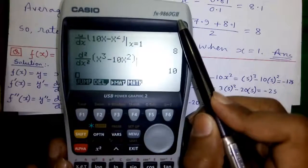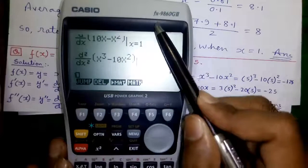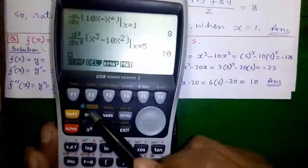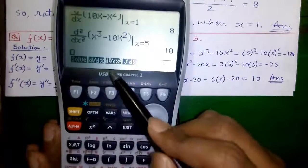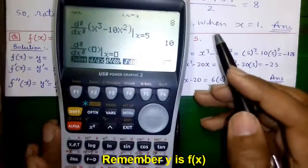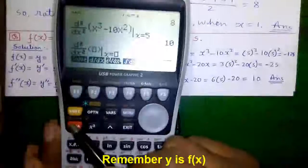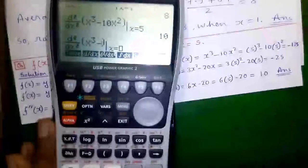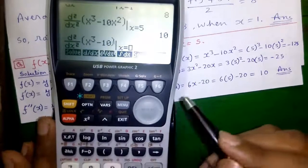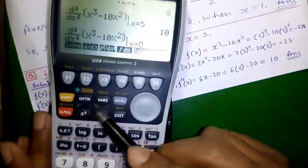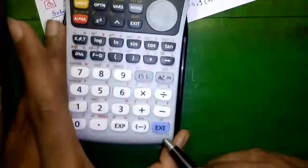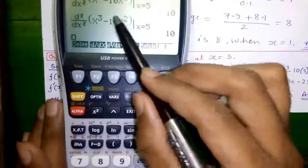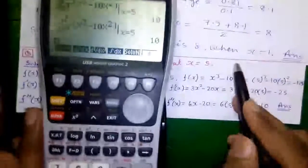Now I will show how to do double differentiation directly on the Casio fx-9860d2 calculator. You need to be in Run and Mathematics mode — press Menu then 1. Then press Option, F4 for Calc, and F3 for d²y/dx². Enter the function x³ minus 10x²: press Alpha and the plus button for x, the 2D power button, type 3, scroll right, minus 10, Alpha plus for x again, and the square button. Scroll right, enter x equals 5, then press Execute. You will get d²y/dx² equals 10, which matches our earlier calculation.